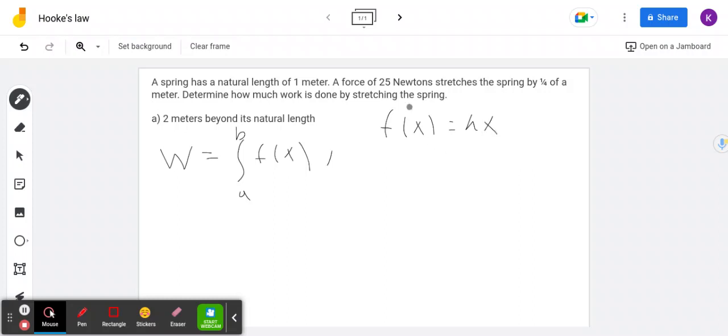We're given that the force is 25 newtons, so f(x) is 25, and the displacement is one-fourth of a meter. So we have 25 equals k over 4, because x is one-fourth. Multiplying 4 on both sides, we get that k, the spring constant, is 100.